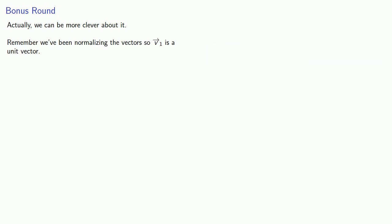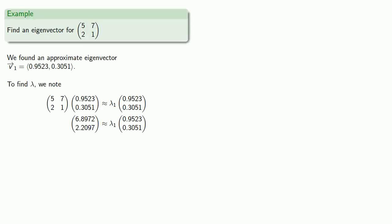Remember, we've been normalizing the vectors so that v1 is actually a unit vector. And so that means the dot product of v1 with Av1 is going to be lambda 1. So that means we can take our dot product of our approximate eigenvector with Av1, which will give us our approximate eigenvalue.